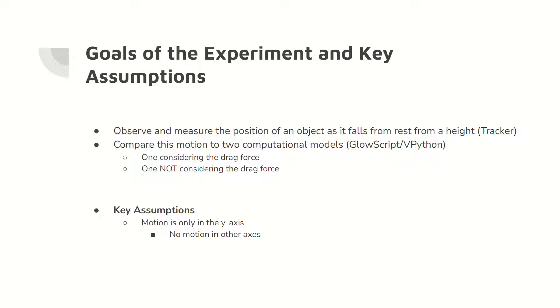The experiment's goals are to observe the position of an object as it falls and then computationally model the motion with two models. One model will consider the drag force while the other model will not consider the drag force. Key assumptions include the motion only being on the y axis.